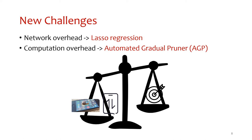However, due to computation limitations, deploying deep learning-based applications on mobile devices faces special challenges. To make on-device deep learning practical, we address two technical issues on mobile devices: network overhead and computational overhead. To reduce network overhead, we adopt lasso regression or L1 regularization to sparsify the item embeddings. To reduce computational overhead on devices, we adopt AGP to prune both recurrent unit layers and fully connected layers.